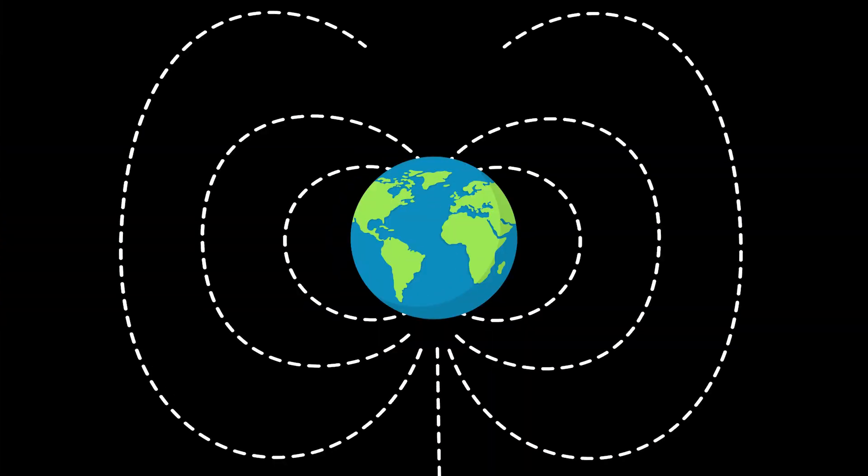The Earth itself is like a giant bar magnet with a north and south pole. But wait, aren't the magnetic field lines going in the wrong direction? They should run from the north pole to the south pole. This is where it gets weird.